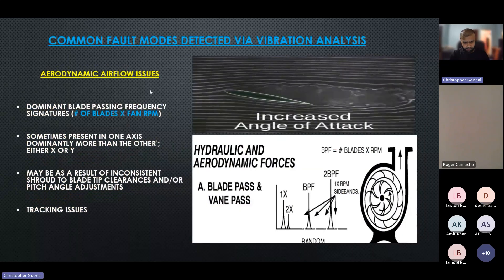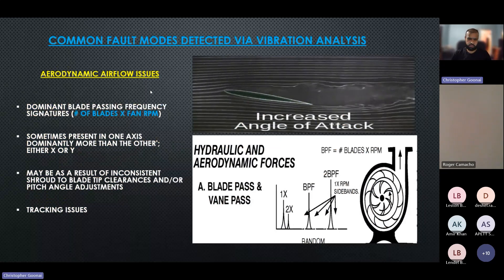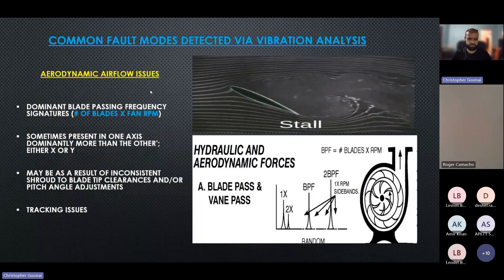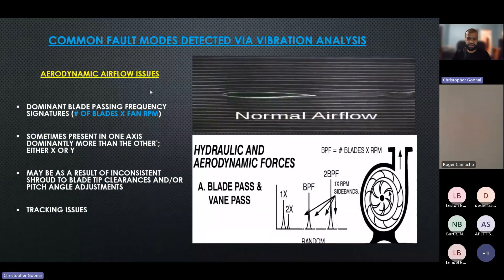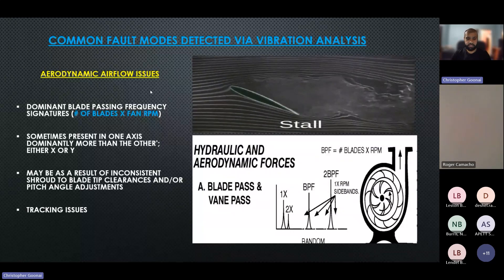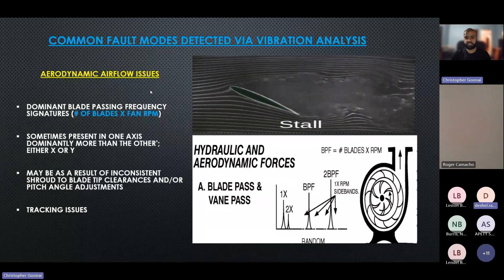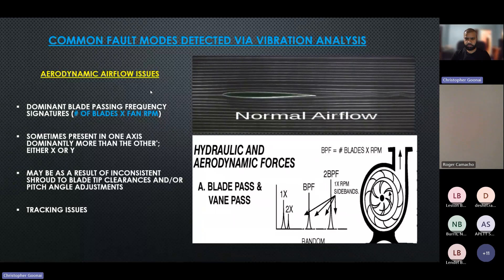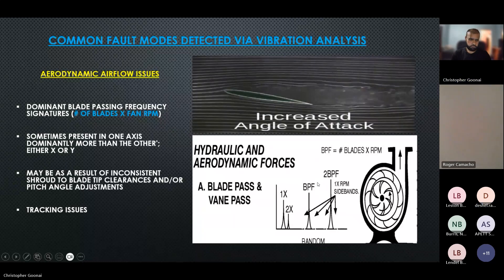Aerodynamic airflow issues — concerning blade tip clearance and pitch angle adjustments — produce a dominant blade passing frequency, which is the number of blades multiplied by the fan RPM. Sometimes it is present dominantly in one axis more than the other — either X or Y — as a result of inconsistent blade tip clearance, pitch angle adjustment, or tracking issues causing flow disruptions. This example shows the X probe with a dominant blade passing frequency at 5X, while the Y probe shows very little, confirming it is predominantly in one axis.